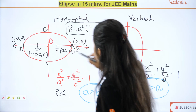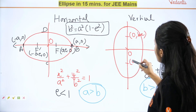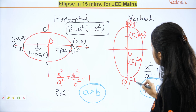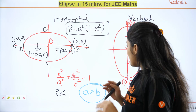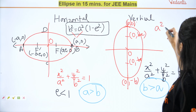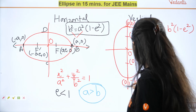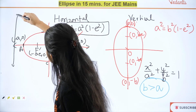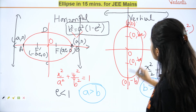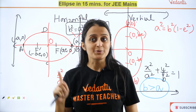In both cases, the center is at the origin. For the vertical ellipse, the length of the major axis is twice of b and the minor axis is twice of a — just a switch from the horizontal case. There's also a line of directrices that becomes horizontal in the vertical ellipse case. Just take a screenshot of this slide.